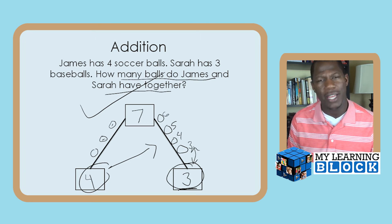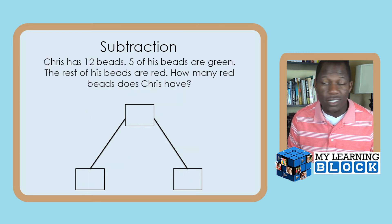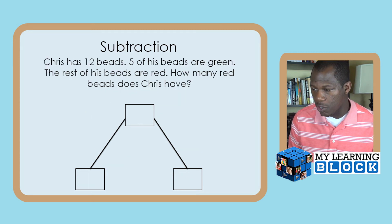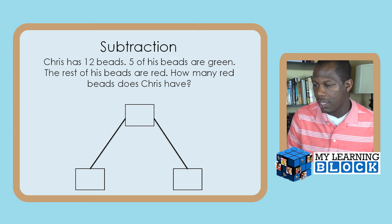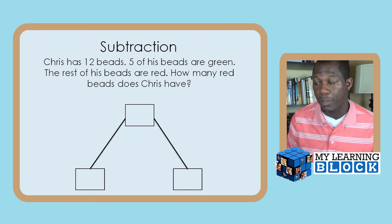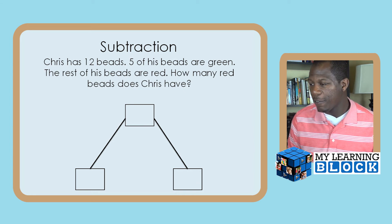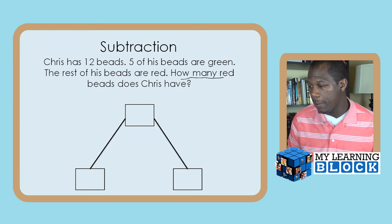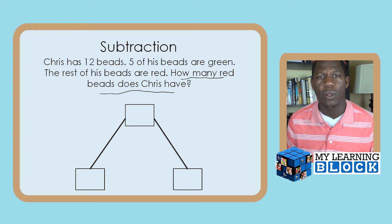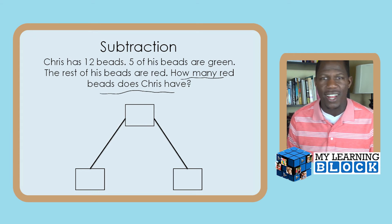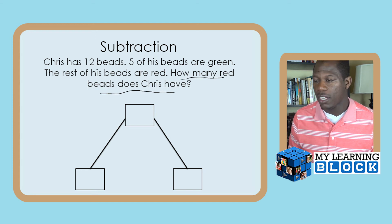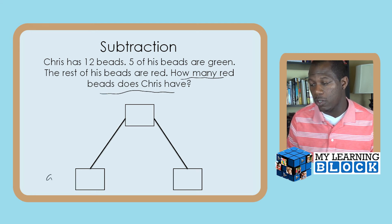That's using the math mountain to add. How do we use it to subtract, or to find an unknown number? Here's another problem — subtraction: Chris has 12 beads. Five of his beads are green. The rest of his beads are red. How many red beads does Chris have? Down here we'll put the green beads — five — and the total, 12, goes at the top.